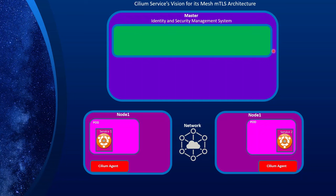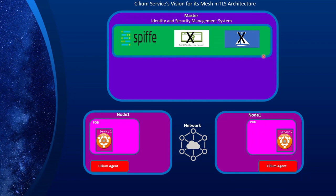Cilium takes a different approach. It splits mutual authentication and message encryption into separate options or feature sets, so you can opt in to one or both. For example, you can choose only mutual authentication, or only encryption, without the other. This provides flexibility that classical MTLS does not. It also provides a framework where different CA providers such as SPIFFE, cert-manager, or other issuers can be used. At the time of recording, only SPIFFE was supported.